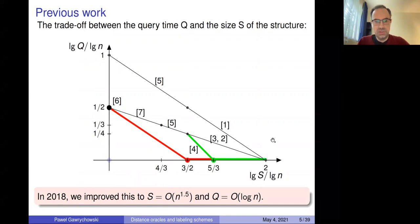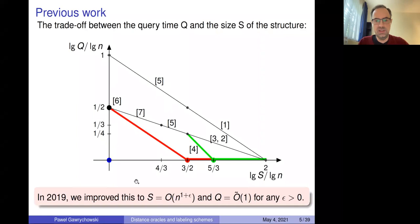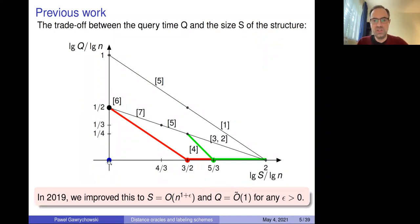That was not the end of the story. In 2019 we had another paper where we improved the space to n^(1+ε) with logarithmic query time — though the logs depend on ε. Essentially it's near-linear space. There was one other paper later that I'll mention briefly in a few minutes.